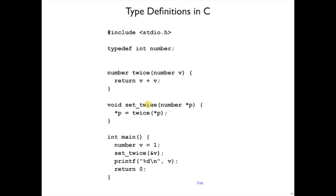I can say that set_twice takes a pointer to a number, calls twice on the value at that pointer, and then updates the pointer. And I can use it in this way here.